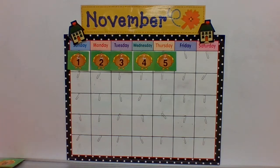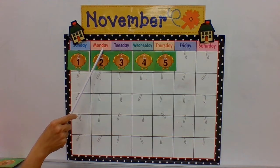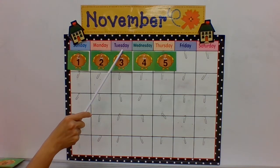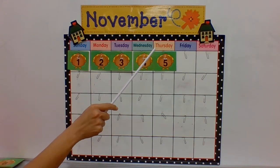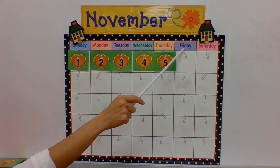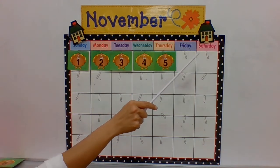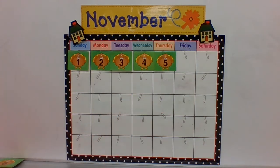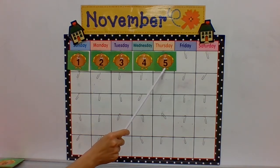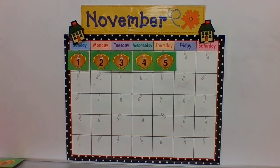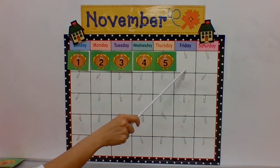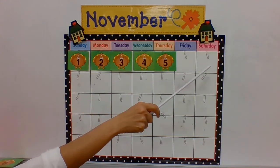Now let's say the days of the week. There are seven days in one week: Sunday, Monday, Tuesday, Wednesday, Thursday, Friday — that's today — Saturday. Those are the seven days of the week. Yesterday was Thursday, November 5th — that already happened. Today is Friday.